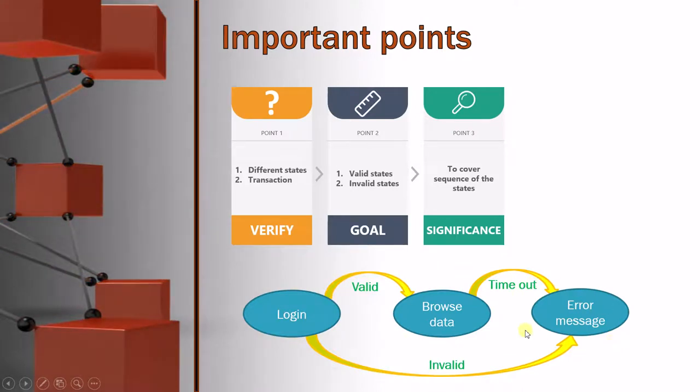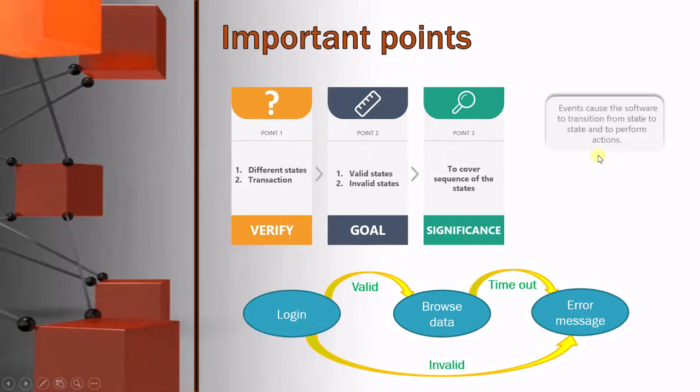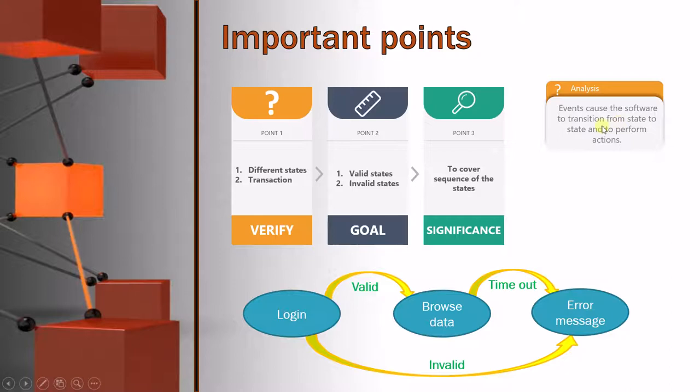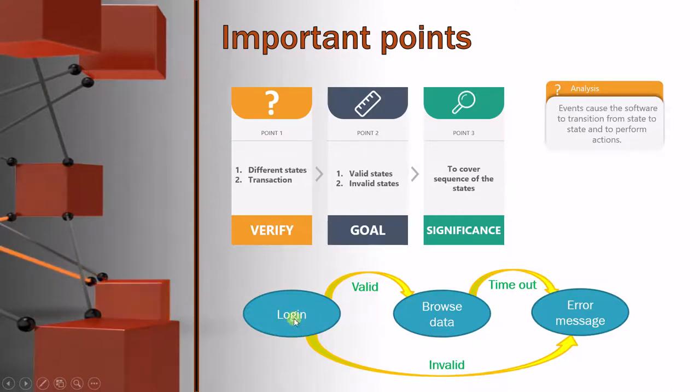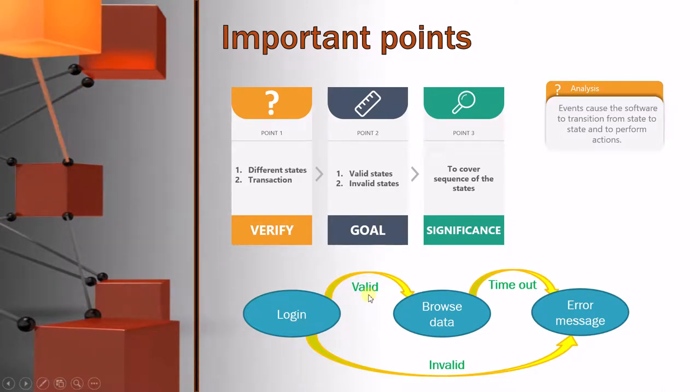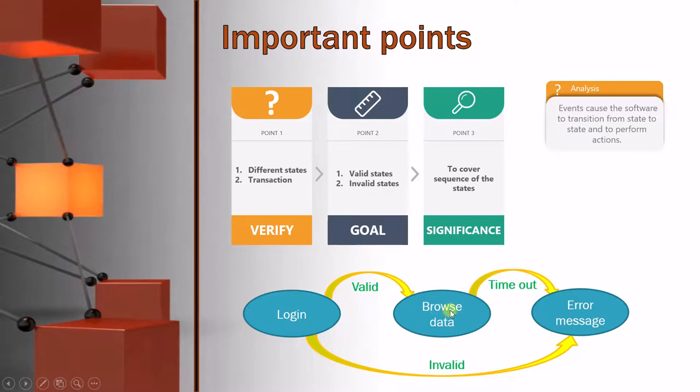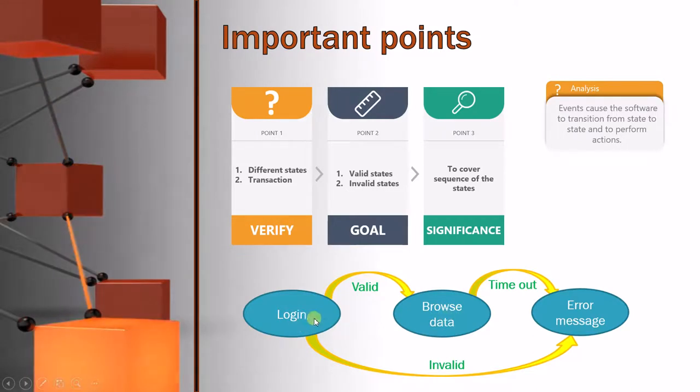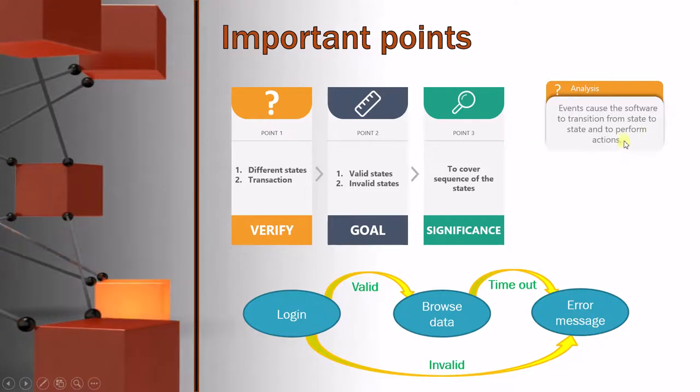From this example, we can have some analysis: Events cause the software to transact from one state to the other state and perform different actions. We were in the login state and our event is to provide the correct user ID as well as password. If that event is valid, then we enter into browsing data. And if that event is wrong, then we enter into error message.